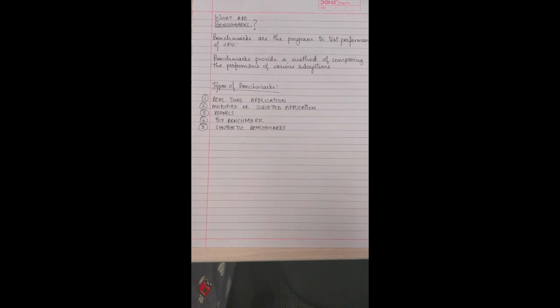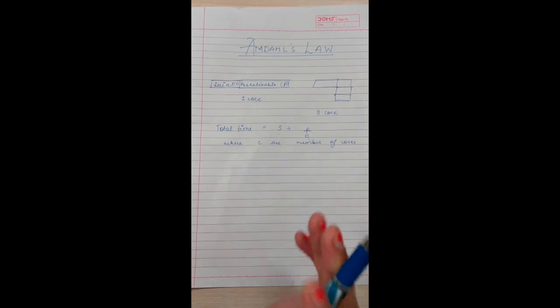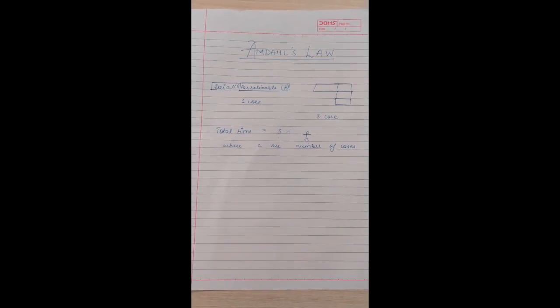Benchmarking is usually associated with assessing performance characteristics of computer hardware. There are five types of benchmarks: real-time application, modified or scripted application, kernels, toy benchmark, and synthetic. In Amdahl's Law, we are going to talk about speed up, efficiency, and cores.